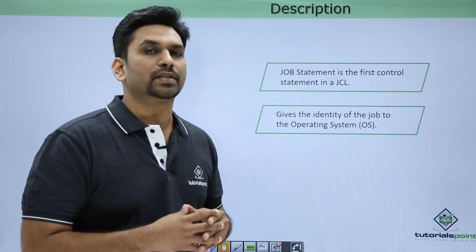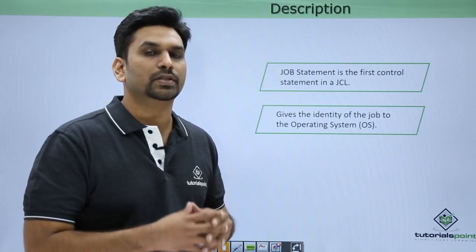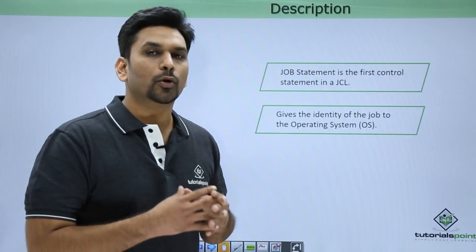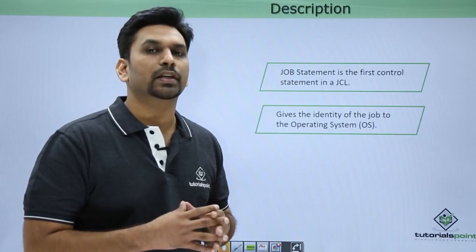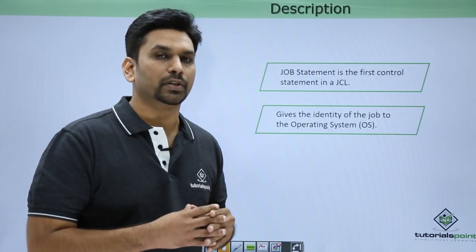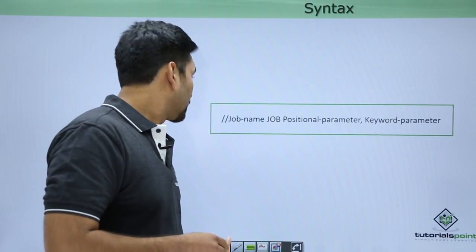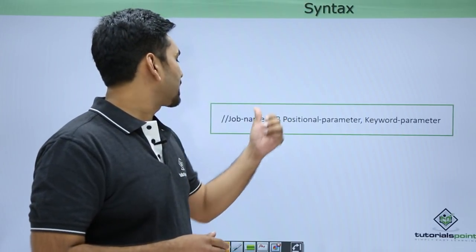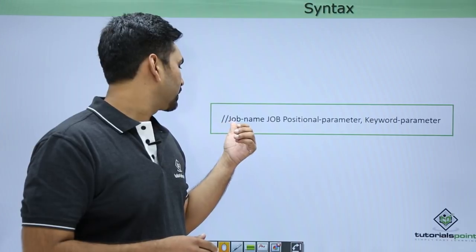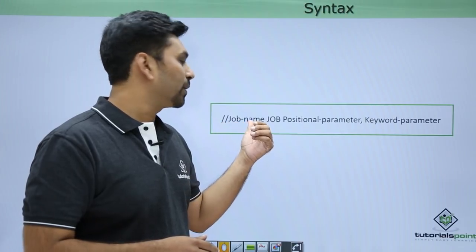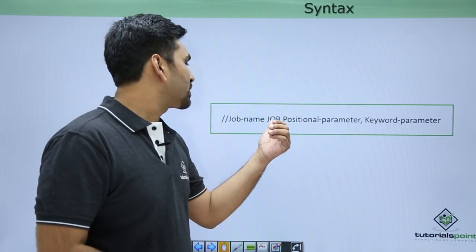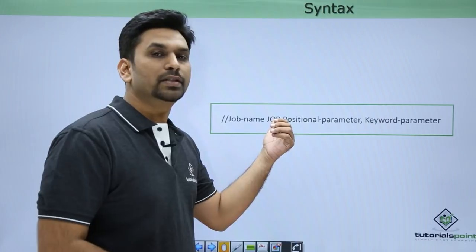Why is the JOB statement required? The JOB statement gives the identity of the job to the operating system, and it is always the first statement in any JCL. If the JOB statement is not present in the JCL, then your JCL will never get executed. This is the syntax — here we have the identifier, then the job name where you can mention any job name, and then the keyword JOB.